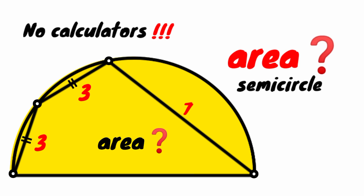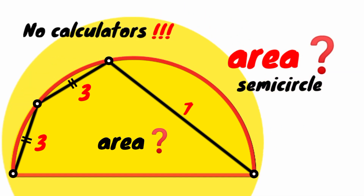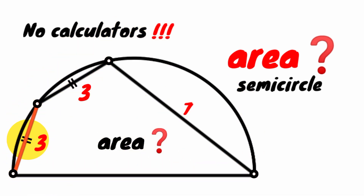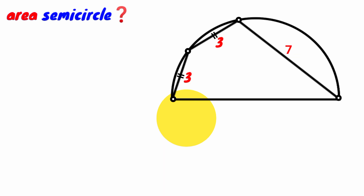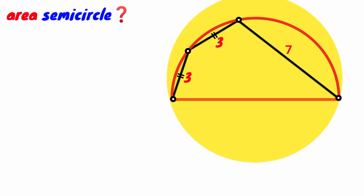Hi everyone, welcome back to another interesting question. We are asked to calculate the area of the semicircle. We are given the length of this chord to be three units, this side is also three units, and the length of this is seven units. So how can we calculate the area of the semicircle?